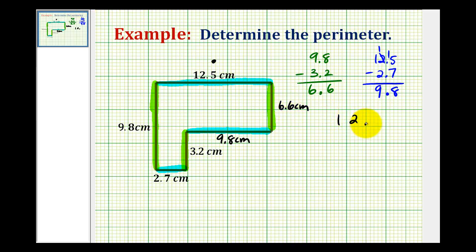So we have 12.5, 6.6, 9.8, 3.2, 2.7, and 9.8. This sum will be the perimeter of the polygon.